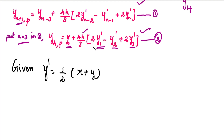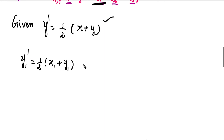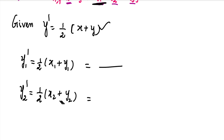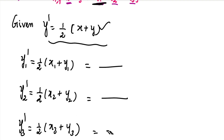In this equation, first we find y1'. Adding suffix 1: y1' = (1/2)(x1 + y1). We substitute and reduce to get the value. Then y2': right-hand side is (1/2)(x2 + y2), substitute and reduce. Again for y3': right-hand side is (1/2)(x3 + y3), substitute to find y3'.